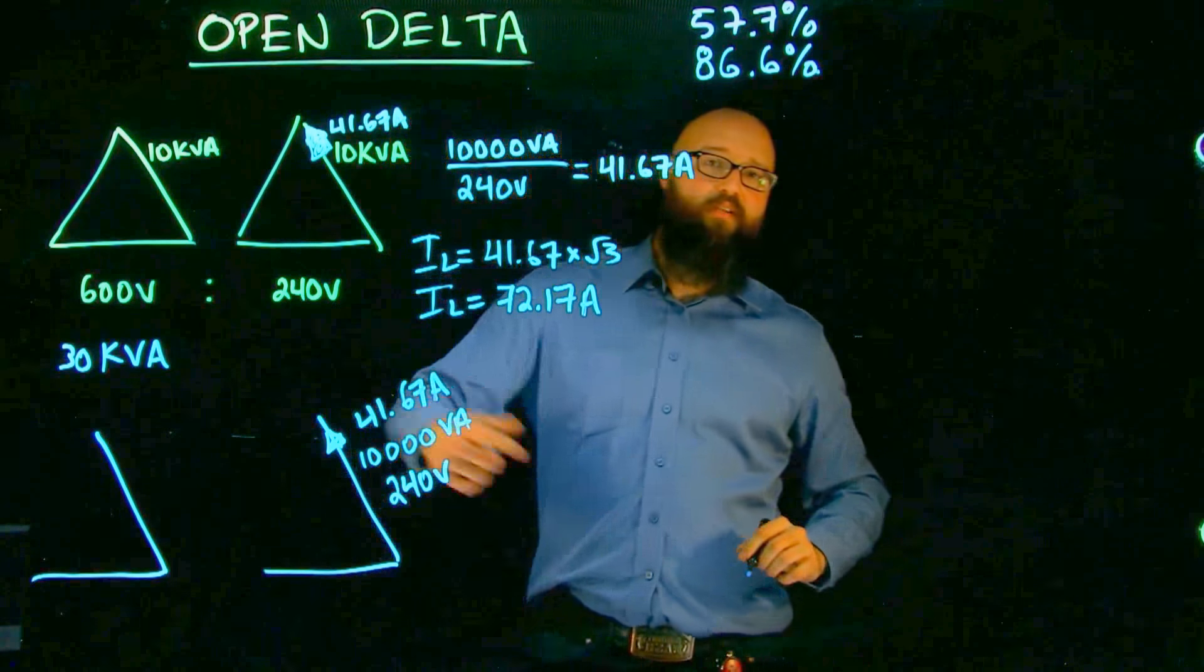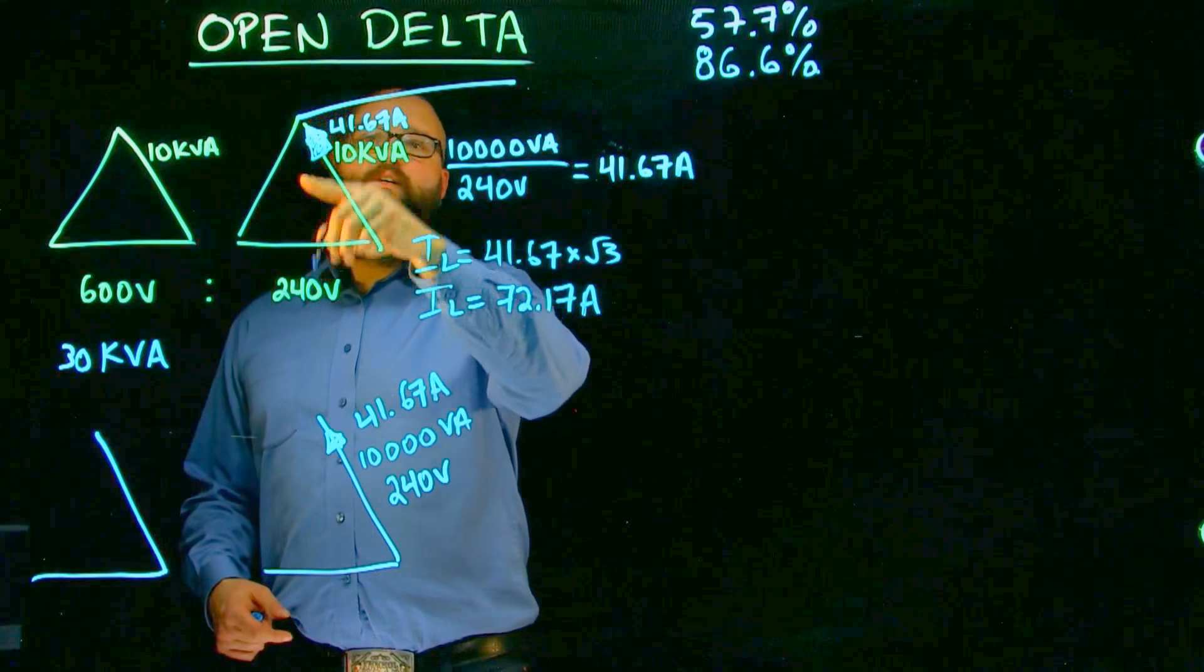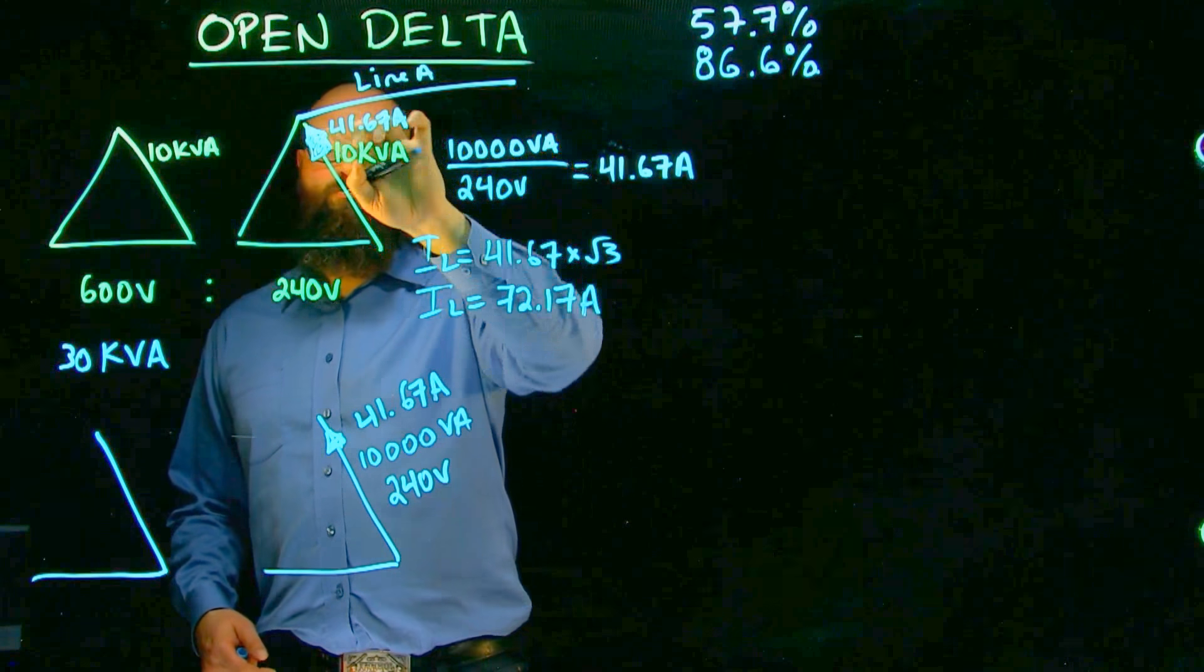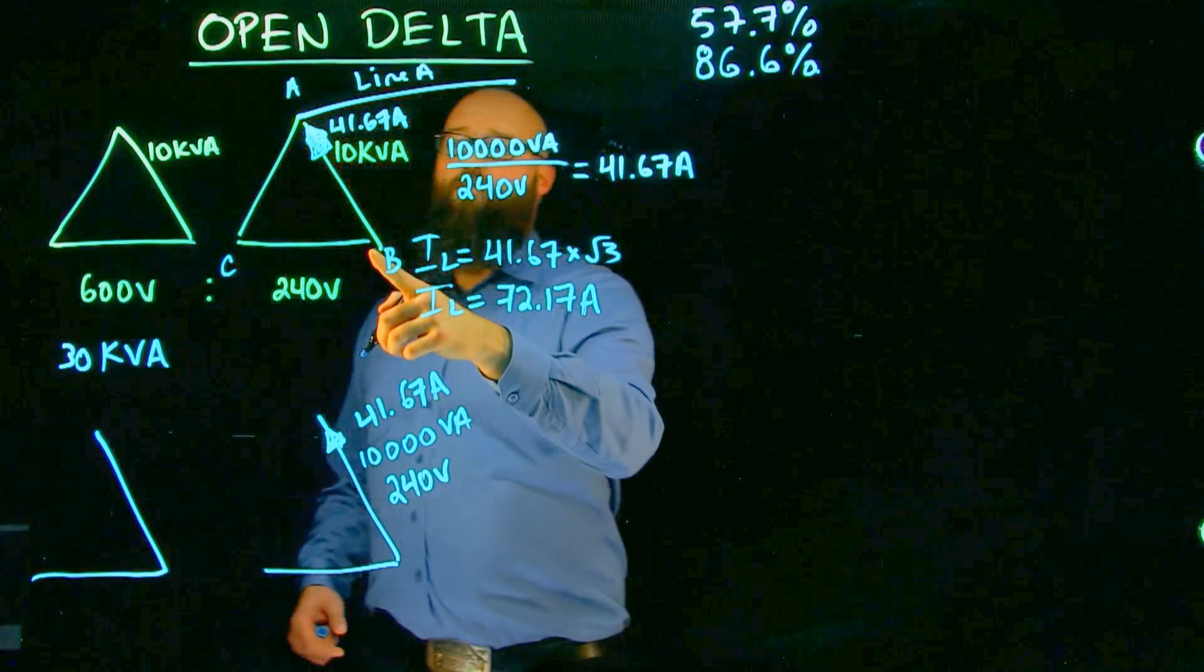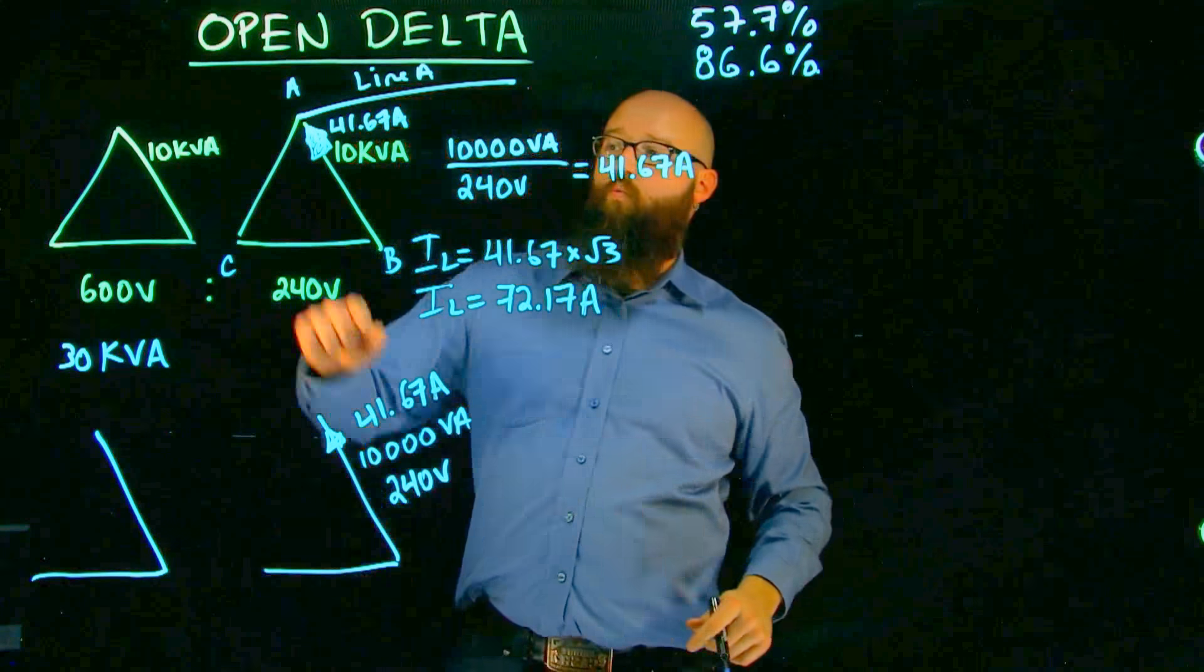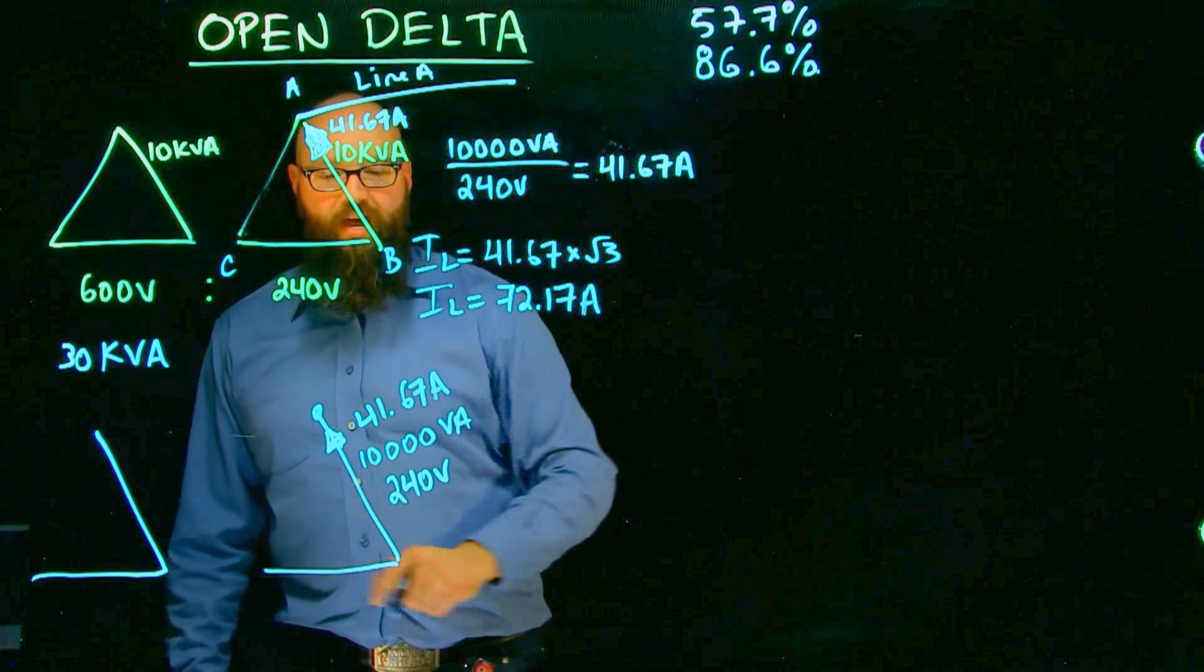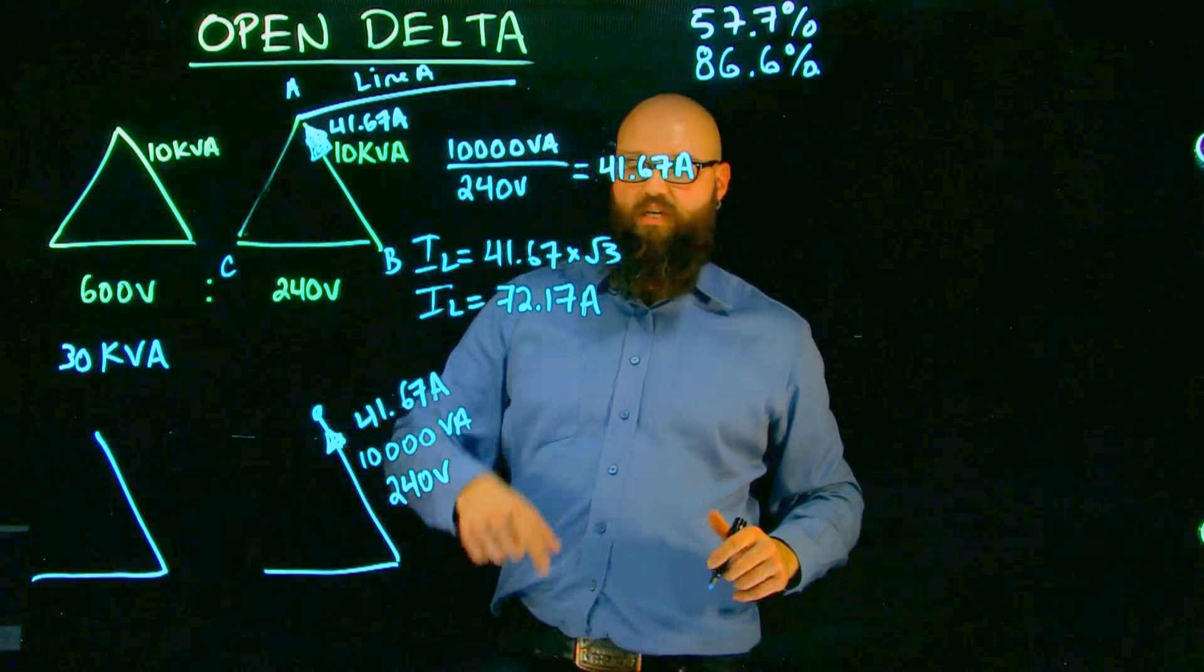But previously, when we had that third leg connected in there, we had, if this was line A, it was composed of, well, we had, I'll go B, C, A up here, we had A to B plus A to C. Okay, when we lose this A to C leg, or our C to A leg, what ends up happening is, we don't have that combination of those two currents anymore. All we have is 41.67 amps.